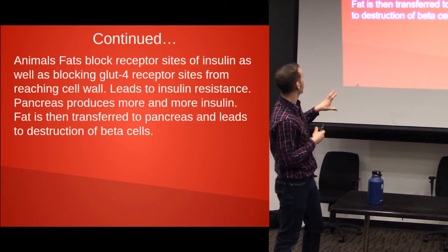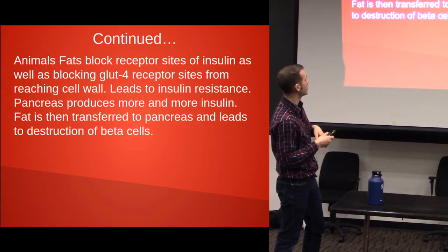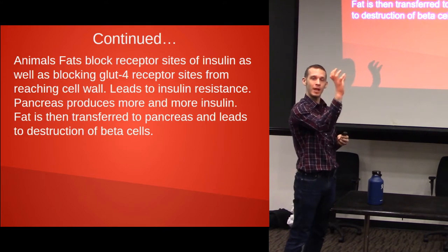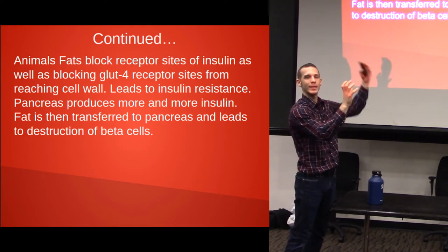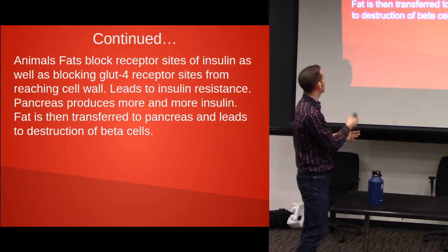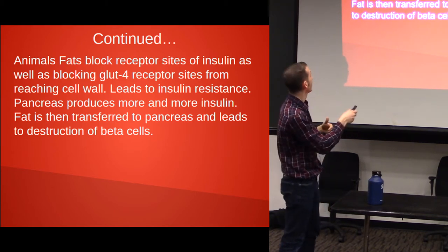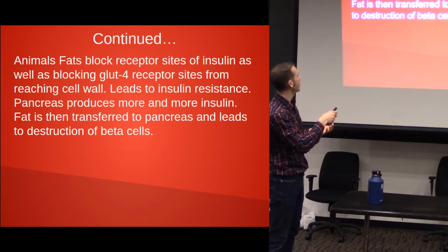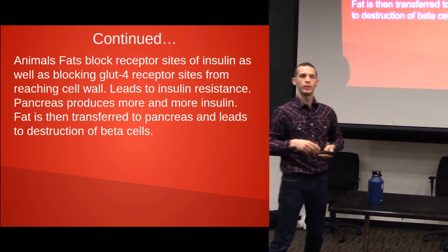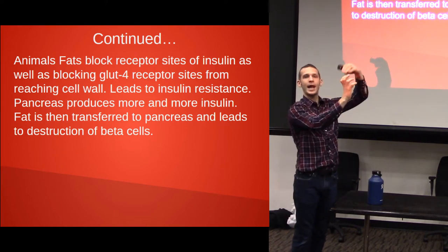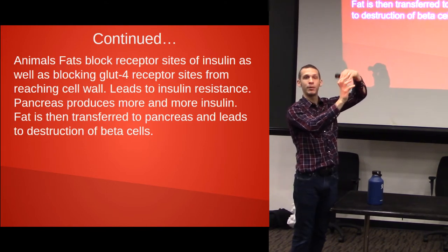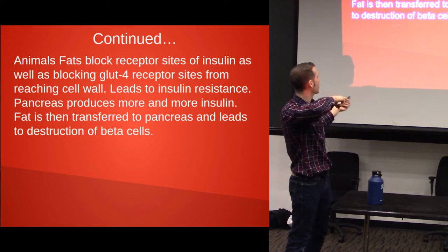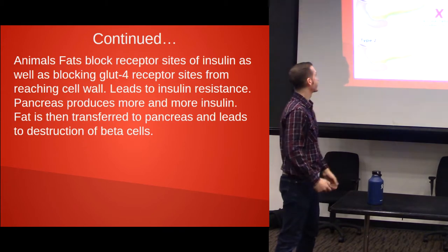Animal fats block receptor sites of insulin as well as blocking GLUT4 receptor sites. The animal fats have been shown to block those receptor sites on the cell membrane, which prevents insulin from attaching. So you take in these animal fats, it increases insulin levels and decreases insulin sensitivity — leading to insulin resistance. The pancreas produces more and more insulin. Fat is then transferred to the pancreas and leads to destruction of the beta cells — the same beta cells that produce insulin.